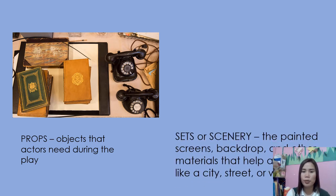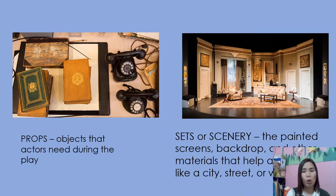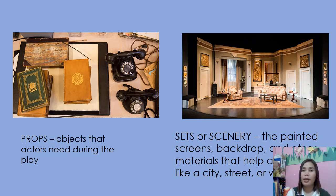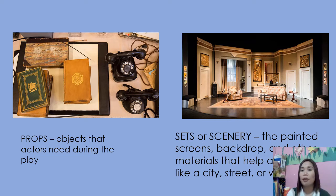Next element, we have sets or scenery. These are the painted screens, backdrops, and other materials that help a stage look like a city, street, or woods. It also means the scenery and furniture on stage. Some theater sets are very elaborate and detailed; others are simple.